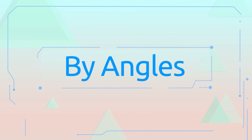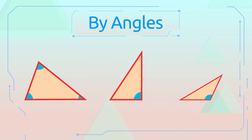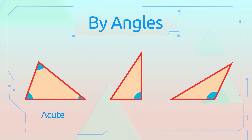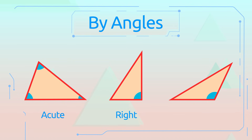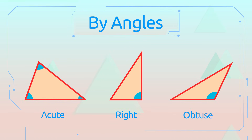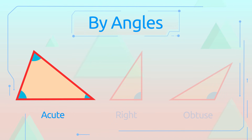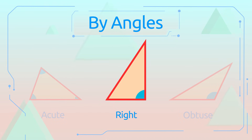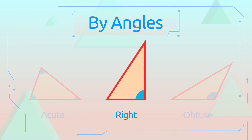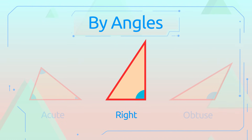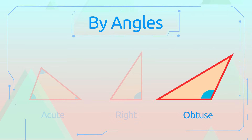If we classify triangles depending on their angles, we would get three types: the acute triangle, the right triangle, and the obtuse triangle. A triangle with three acute angles is called an acute triangle. A triangle with one right angle is called a right triangle, and a triangle with one obtuse angle is called an obtuse triangle.